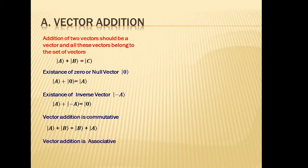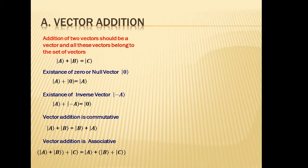Vector addition is also associative. When adding more than two vectors, the order doesn't matter. For example, adding vectors a, b, and c: whether you add a and b first and then add c, or add b and c first and then add a, the end result is the same. For a set of vectors to form a vector space, all these vector addition properties need to be satisfied.